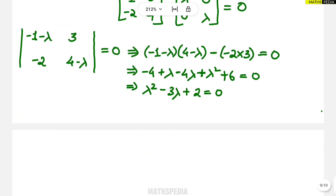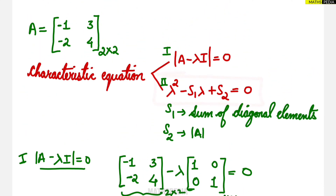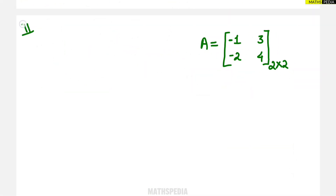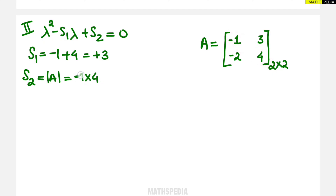This is one method to find the characteristic equation. Now let us use the formula method. I need to find S1 and S2. S1 is the sum of the diagonal elements, which here is minus 1 plus 4, so S1 equals plus 3. Next, S2 is the determinant of A, which is computed by multiplying the diagonal elements.